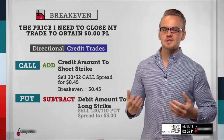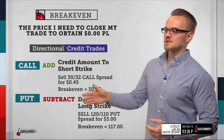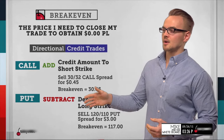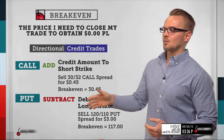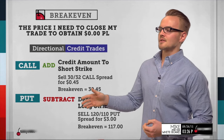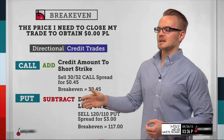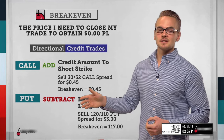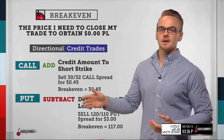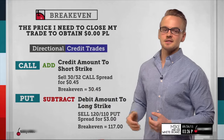For puts on the credit side, it's similar but opposite — subtract the credit amount from the short strike. So if I'm selling the $1.20 put and buying the $1.10 put for $0.03, my break-even is $1.17. Again, it's a buffer that helps me in this situation.